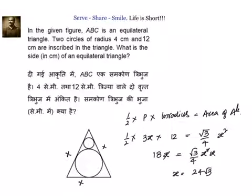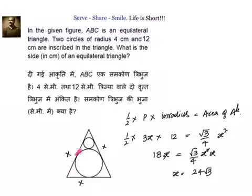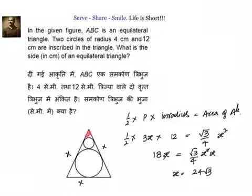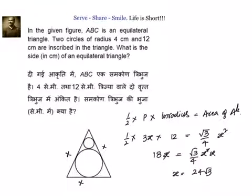In this particular problem, the inclusion of the small circle is only to divert us from the original problem. We don't need it. We just need the larger circle — the incircle — to find the side of the equilateral triangle. Whenever we have an incircle, half into perimeter into inradius equals the area of the triangle, because we can divide the triangle into 3 parts where all bases add up to the perimeter and all altitudes equal the inradius. That area also equals root 3 over 4 into side squared.